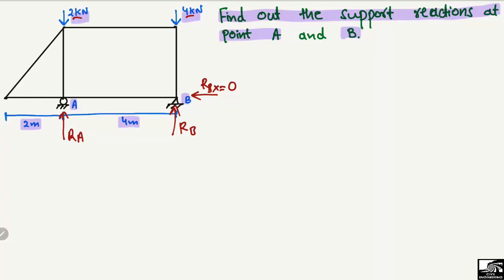Ra and RB are unknown. We use the equilibrium equations to find the support reactions. We start with the moment equation — summation of moments at point B equals zero. The sign convention: clockwise moment is taken as positive and anticlockwise moment is taken as negative.